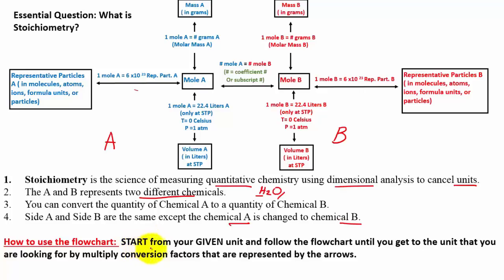You start from your given unit based on your problems and follow the flowchart until you get to the unit that you are looking for by multiplying conversion factors that are represented by arrows.